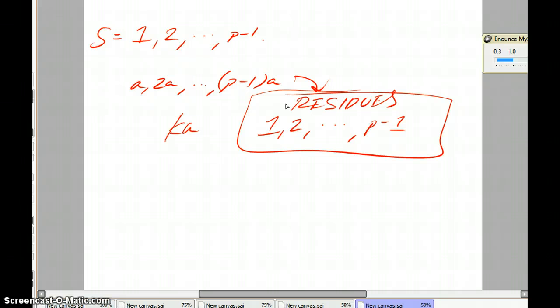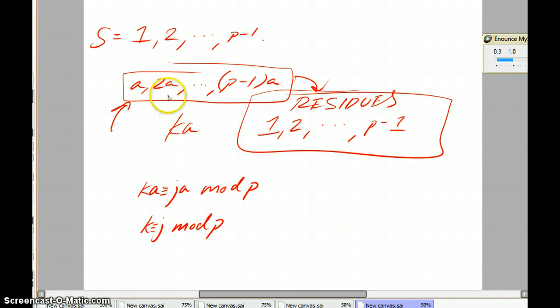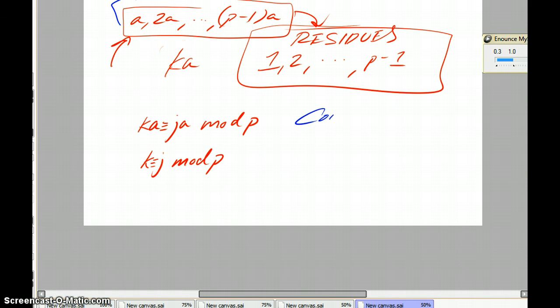The third point is that no two of these elements are congruent. That means no two of these elements in this set are congruent. Specifically, if kA was congruent to jA mod p, then we would have k congruent to j mod p. But this is not the case, because a is relatively prime to p, so we can divide by a, as discussed earlier. But this cannot be the case, because all the numbers here are distinct.